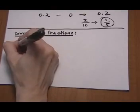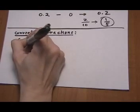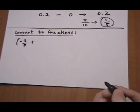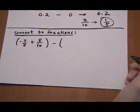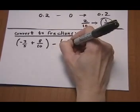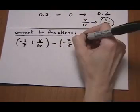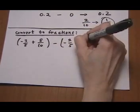So we have minus 3 fifths, plus 0.8 is the same as 8 tenths, take away, minus 2 fifths, plus 0.4. 0.4 is 4 tenths.